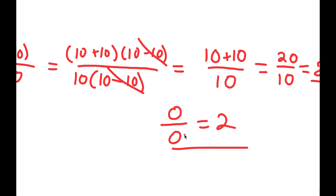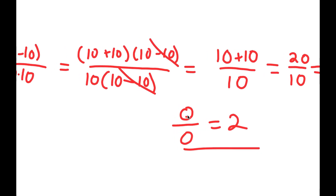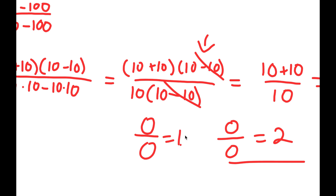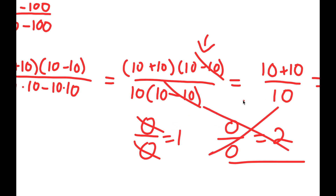Obviously, 0 over 0 is not 2. So where did I go wrong? Well, I went wrong right here. Remember how I canceled out the 10 minus 10 over 10 minus 10? Well, what is 10 minus 10? It's 0. So that's saying that 0 divided by 0 equals 1, and I can't cancel these out because 0 divided by 0 is not 1. So that is wrong, and 0 divided by 0 is not equal to 2.